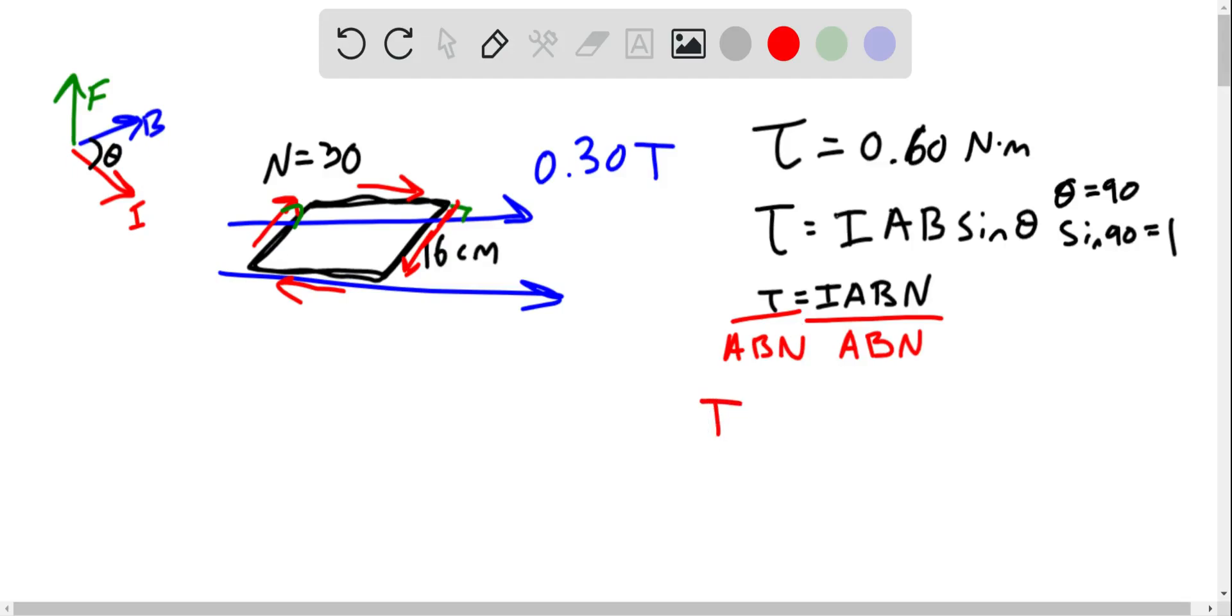And then I, current in that wire, is just torque divided by area, magnetic field, and number of turns in the wire. From there, we just plug in all these things that we know.